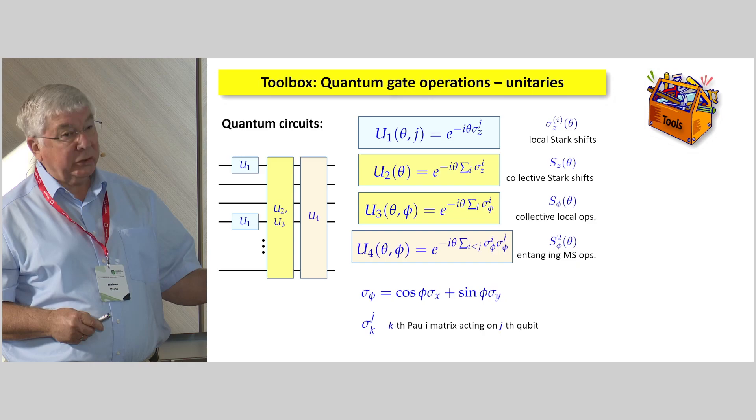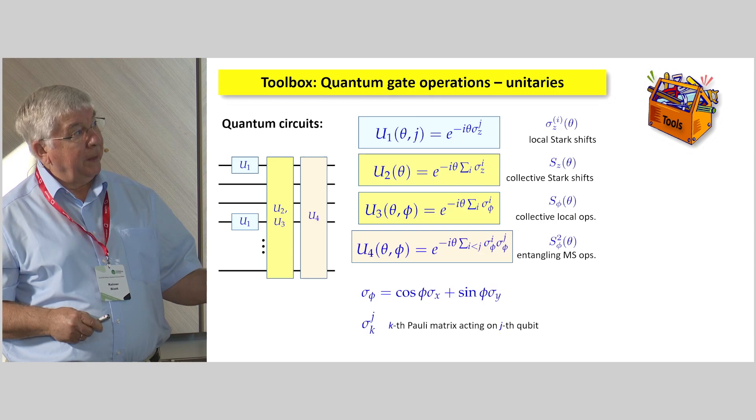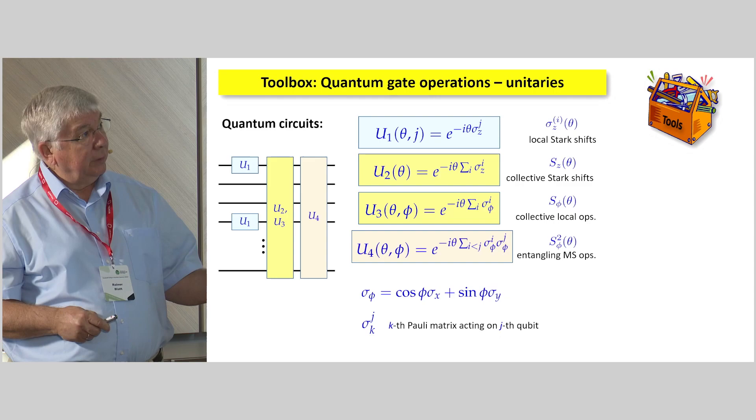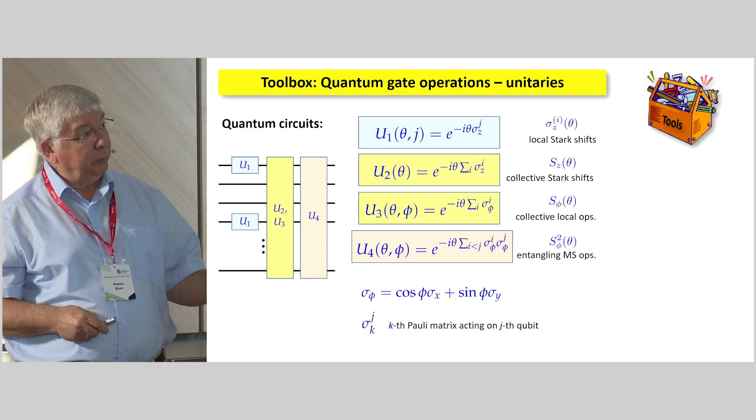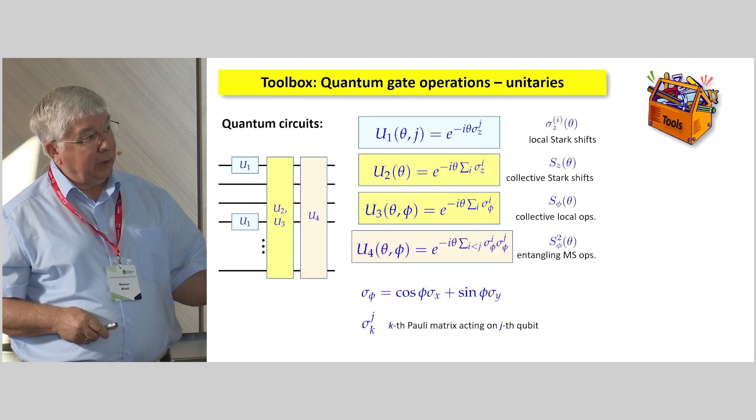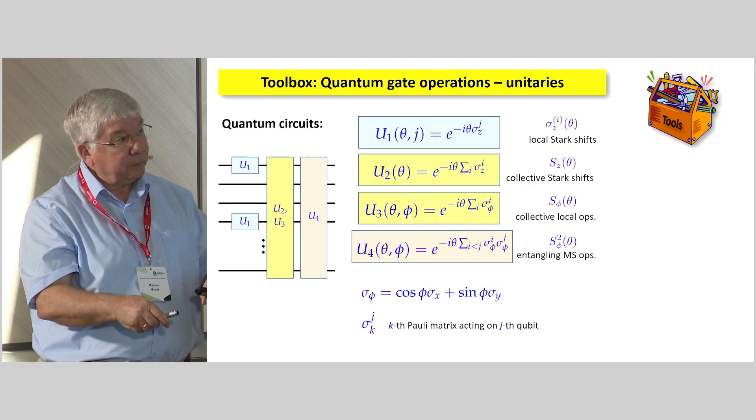So this is just the Stark shift, the local Stark shift. This is a collective Stark shift applied to all of these individually, but globally. They don't have anything to do with each other. This is the collective local operations on resonance, for example. It could be x, y, or any superposition. And this is the Mølmer-Sørensen operation, which can be written as a spin-spin interaction here. Keep that in mind. We'll come back to this notation a little later.